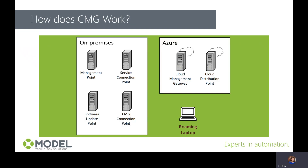How does this work? The internet-connected Configuration Manager clients request policy from the Azure CMG Cloud Service. The Azure CMG Cloud Service then forwards the client communication to the on-premises CMG Connection Point.